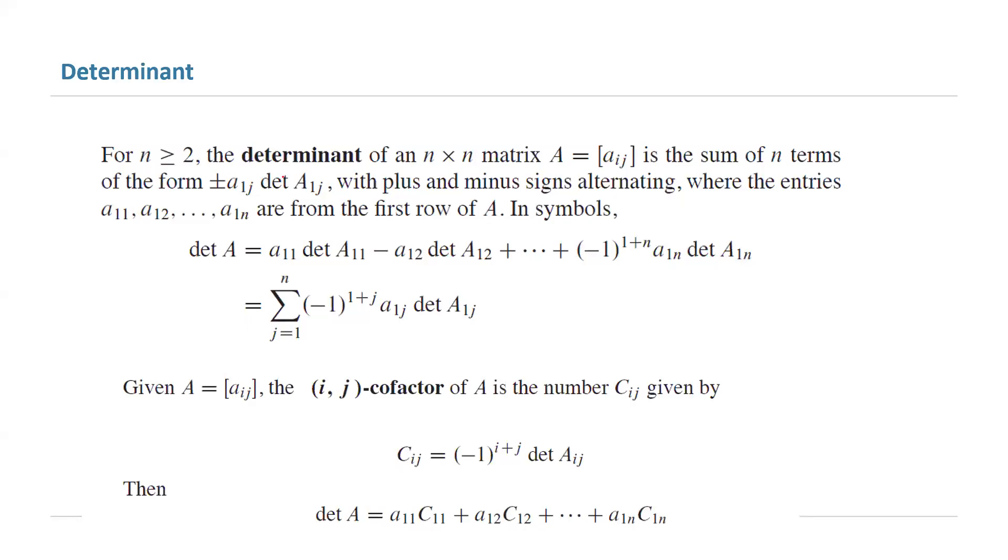In general, in order to find the determinant of a matrix, you can follow the summation formula: the summation of negative 1 raised to power 1 plus j, times a sub 1j, times the determinant of the matrix 1j. j starts from 1 and goes to n.